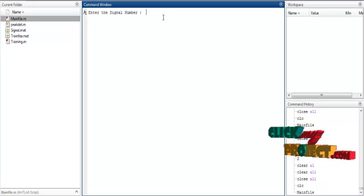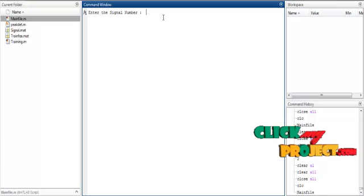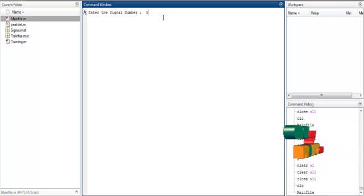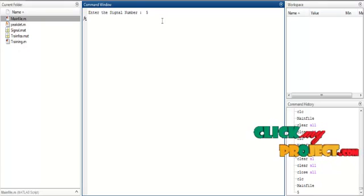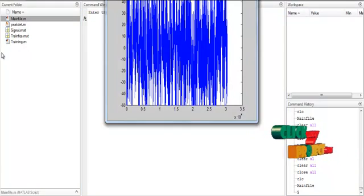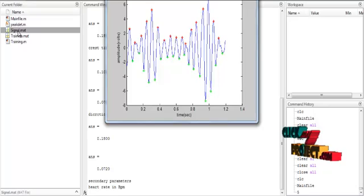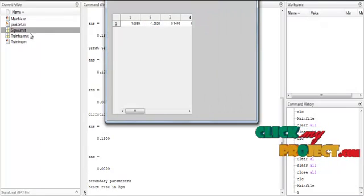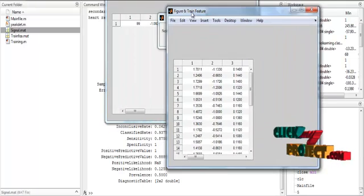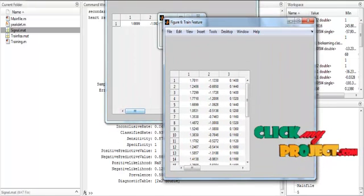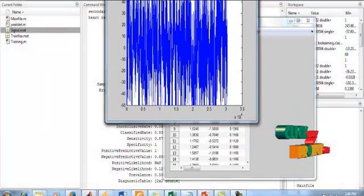Now we have to give the input signal number. I will give the input signal number as 5. The 5th signal is automatically retrieved from the MAT file, which is already stored in signal.mat. Now the process will run automatically. We'll discuss the results one by one.